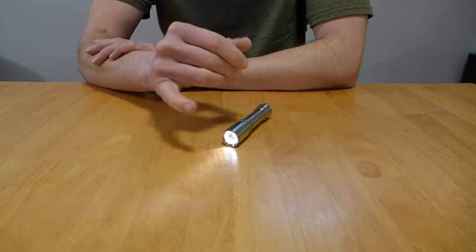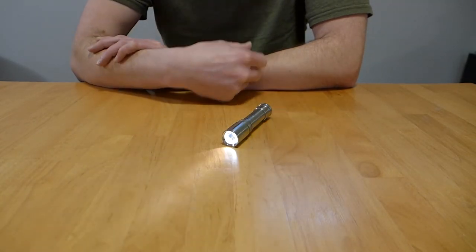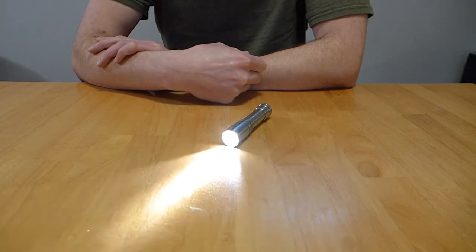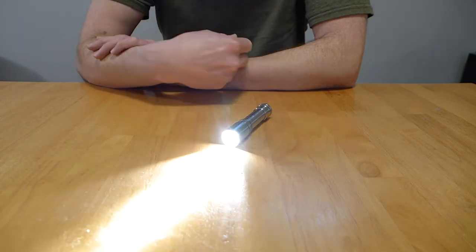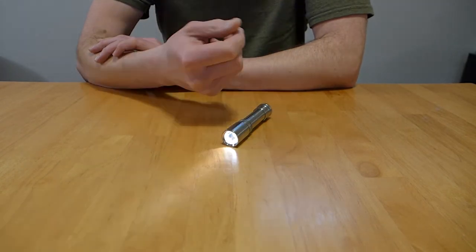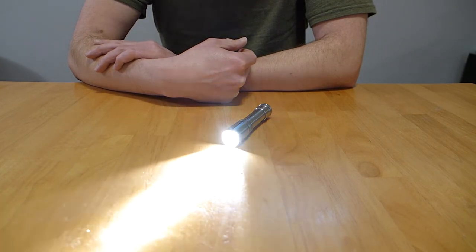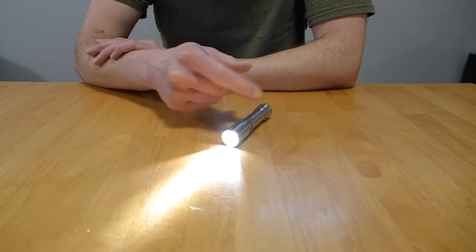It's going to go to the next menu item, which is menu item seven. You'll be able to see that by the seven flashes: one, two, three, four, five, six, seven. This menu item is debounce. It's flashing three times right now, which means it's set to medium. That's a good setting, just leave it alone. It means that when you bang your light it won't switch brightness levels on you.